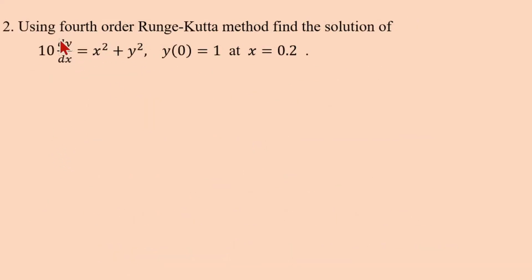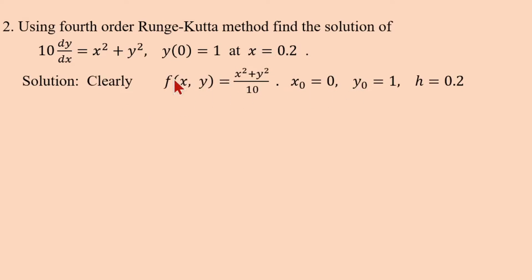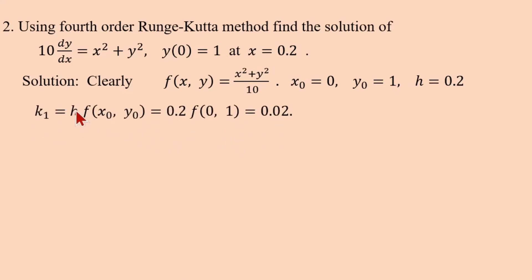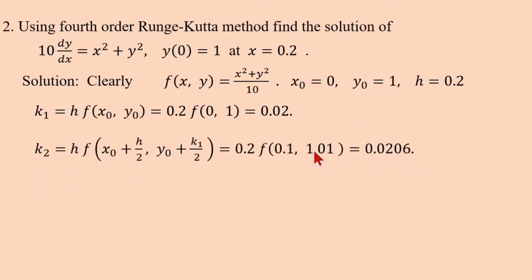One more example: dy/dx = (x² + y²)/10, so f(x,y) = (x² + y²)/10. Increment in x is 0.2, x₀ = 0, y₀ = 1, h = 0.2. k1 = 0.2·f(0, 1) = 0.2·(0 + 1)/10 = 0.02. Divide by 2, add y₀: y-value = 1.01, x-value = 0.1. k2 = 0.2·(0.1² + 1.01²)/10 = 0.0206.